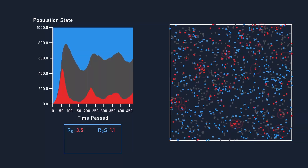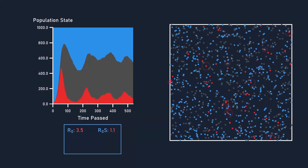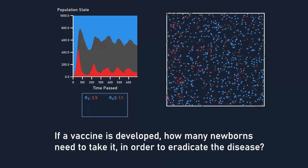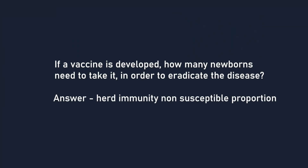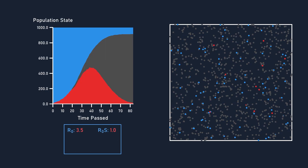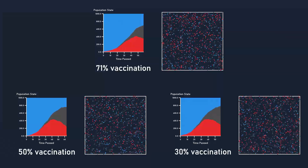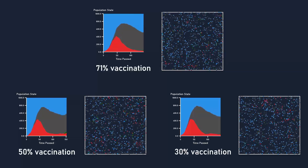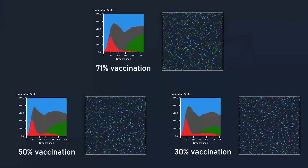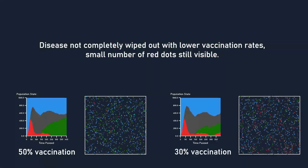Here's where the herd immunity application can be even more useful, because newborn babies often get vaccinated. Assuming that at some point during the endemic a vaccine is developed, what proportion of newborn babies need to get that vaccine for the disease to eventually be wiped out? This proportion is equal to the herd immunity non-susceptible proportion of the population. Let's add vaccination to our simulation after the first wave on the 140th day, with vaccinated people represented in green. The value of S at herd immunity is 29%, telling us approximately 71% of the population must be immune for eradication. Lower vaccination rates often fail to completely eradicate the disease, and that's why finding the herd immunity value can be so useful.